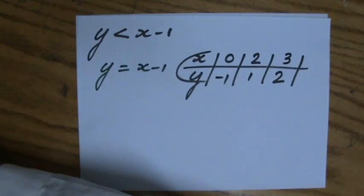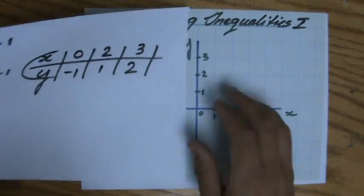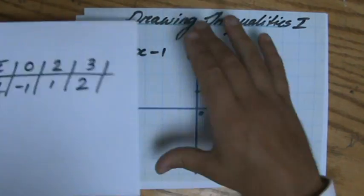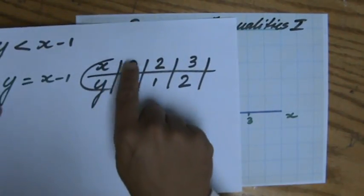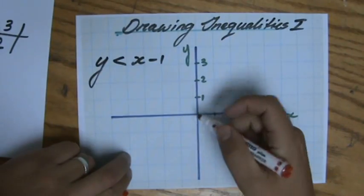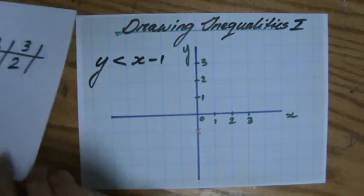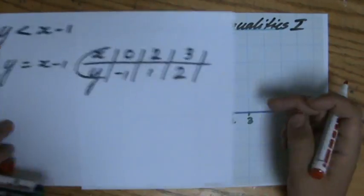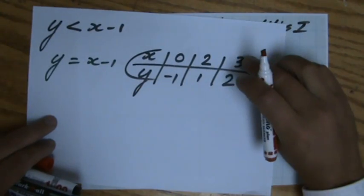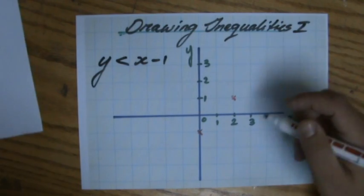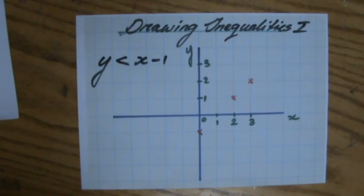I'm going back now to my graph. I'm going to plot those coordinates like I always did before. I already prepared the scale — one block is one unit. I'll plot 0, minus 1 in red — that's my y-intercept. When x is 2, y is 1. And my third point: x is 3, y is 2. If those three are on one line, then I know I didn't make a silly mistake.